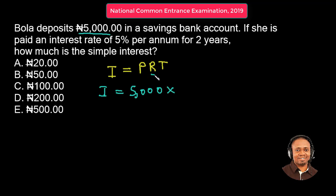The rate is the interest rate, which we have as 5%, and 5% means 5 over 100. Then for the time, it took two years. So we multiply and write that out: two.